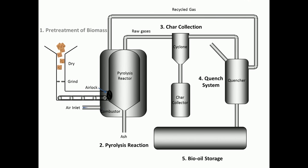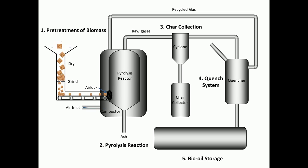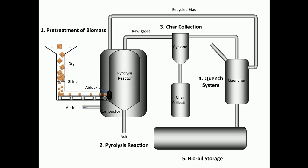The first step is the pre-treatment of the biomass. The efficiency and the nature of the pyrolysis depend on the particle size and the moisture content of the feedstock. The high moisture of waste streams require drying, and feedstock has to be size reduced before being used for pyrolysis.